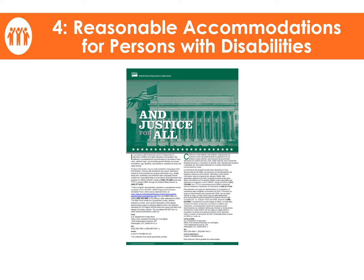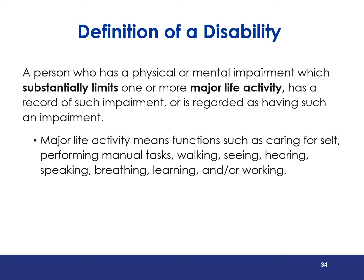Let's now shift our focus to reasonable accommodations for persons with disabilities. The definition of a disability is a person who has a physical or mental impairment which substantially limits one or more major life activity, has a record of such impairment, or is regarded as having such an impairment. Major life activities means functions such as caring for self, performing manual tasks, walking, seeing, hearing, speaking, breathing, learning, or working. The Rehabilitation Act of 1973, specifically Section 504, prohibits discrimination on the basis of disability in programs and activities that receive federal financial assistance.